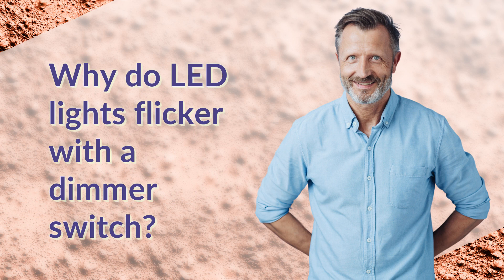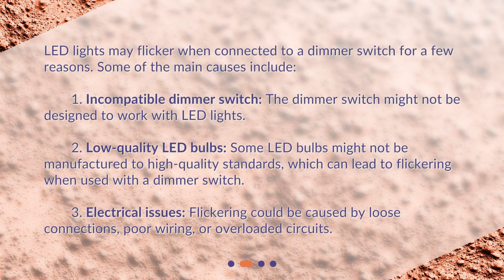Why do LED lights flicker with a dimmer switch? LED lights may flicker when connected to a dimmer switch for a few reasons. Some of the main causes include: 1. Incompatible dimmer switch — the dimmer switch might not be designed to work with LED lights.